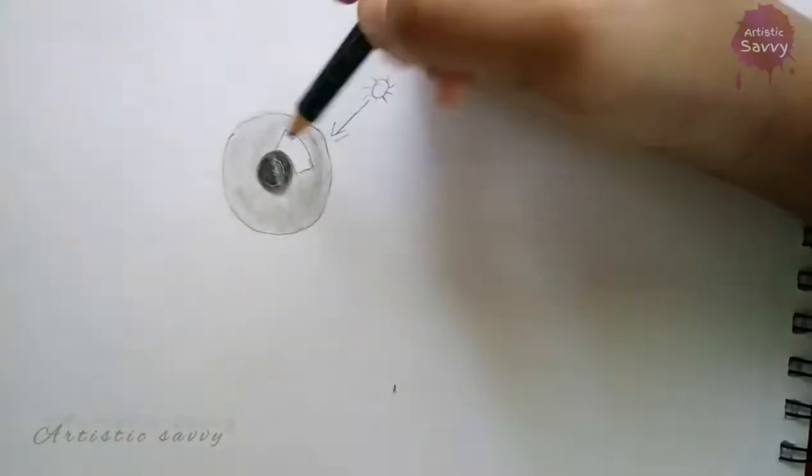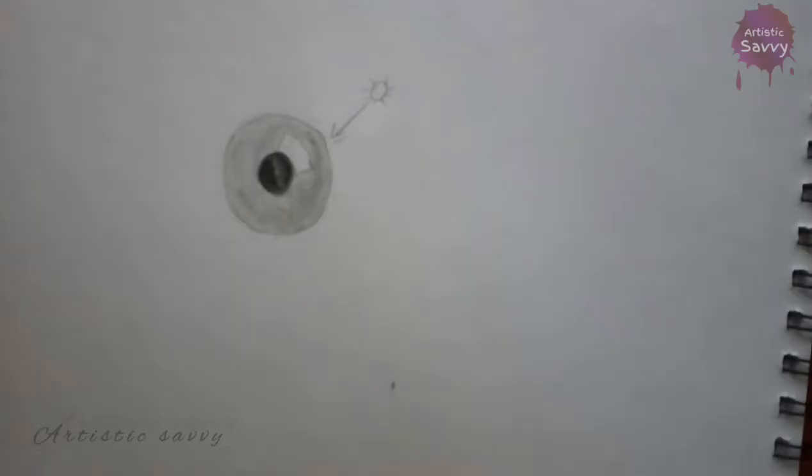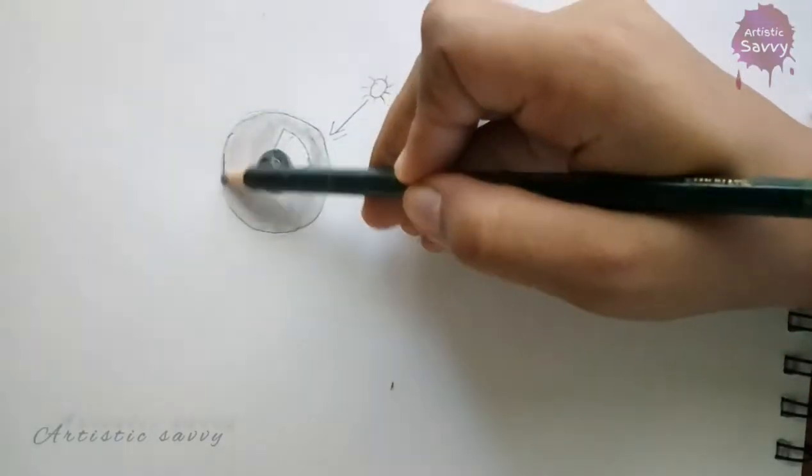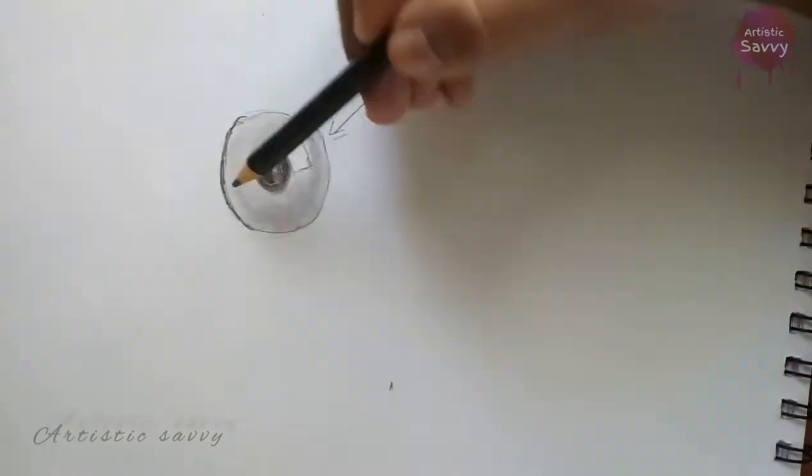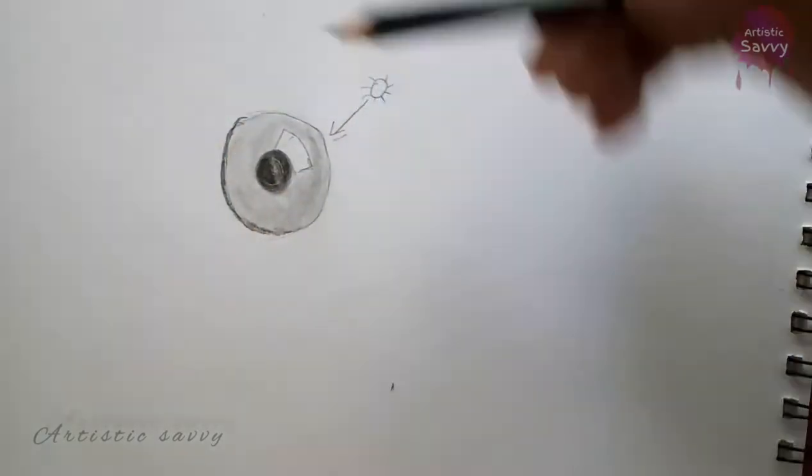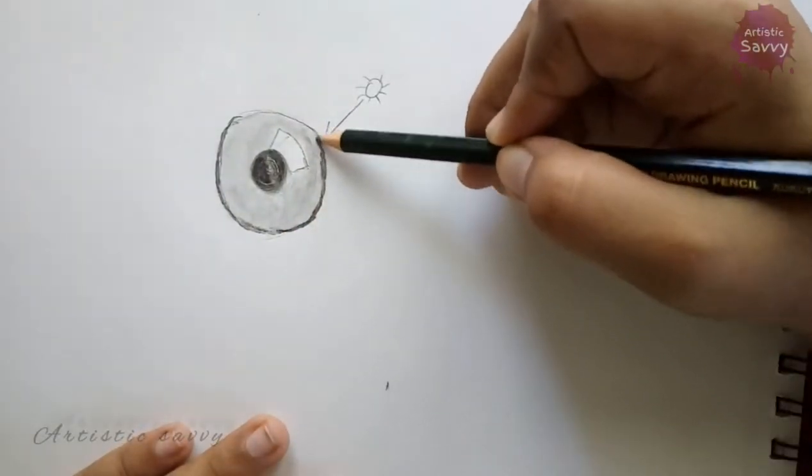After blending it, with my 4B pencil I'm going to shade the sides of my iris, and after that blend it.